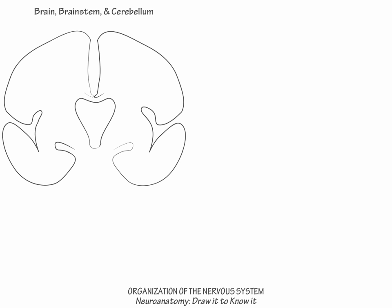Begin with a coronal section through the brain. From outside to inside, label the meninges, which protect and nourish the nervous system, the cortex, which is the outer cellular gray matter brain area, and the subcortical white matter, which carries impulses throughout the brain.